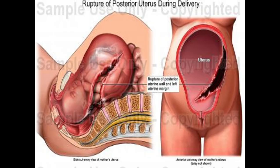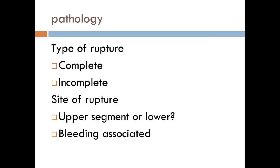This picture demonstrates ruptured uterus with complete disruption of the uterine wall. Ruptured uterus can be either complete or incomplete. Complete rupture means disruption of the uterine wall including the peritoneal covering, more common in the upper uterine segment because the peritoneum is closely adherent there. Incomplete rupture means disruption of the uterine muscles only with intact peritoneal covering, more common in the lower uterine segment. In obstructed labor, the lower segment is most susceptible to rupture due to overstretching.